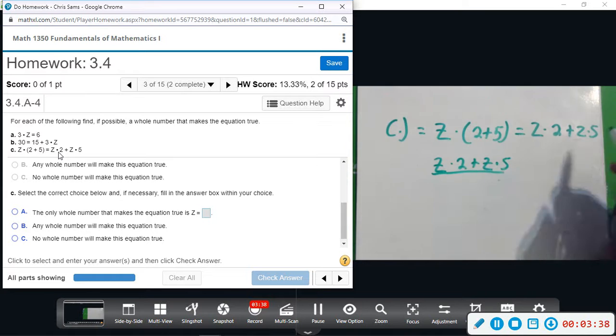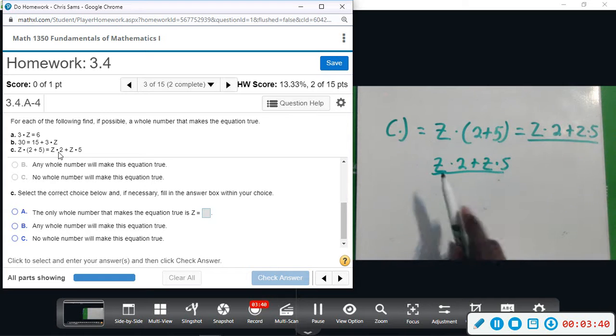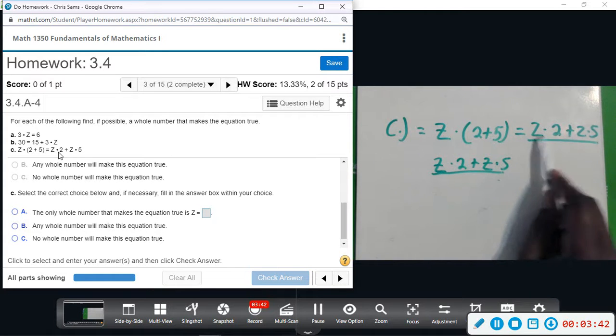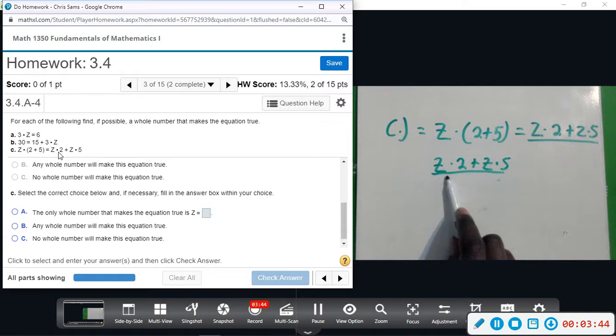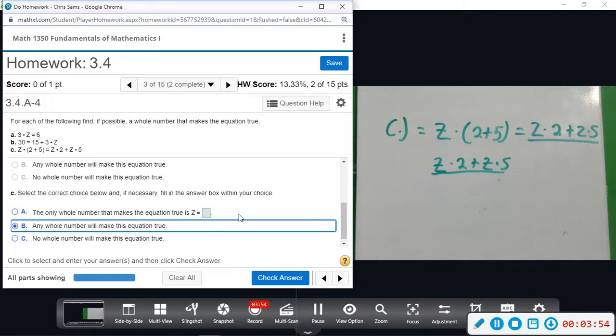Okay, this side now looks exactly like this side. So no matter what you pick for z, since both of them are the same, it will work. So z can be any whole number to make this true. Any whole number will make this equation true, so no matter what you pick for z, it's going to be the same on both sides.